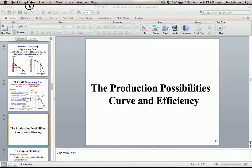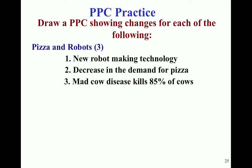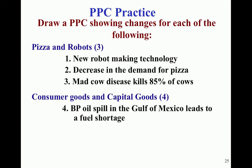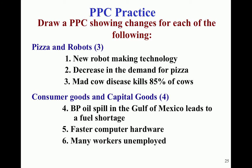Here's some practice. You should pause the recording, take as long as you need, and then play it back when we look at the answers. For the pizza and robots PPC: number one, new robot-making technology; number two, a decrease in the demand for pizza; number three, mad cow disease kills 85% of cows. Then for consumer and capital goods: a BP oil spill in the Gulf of Mexico leads to a fuel shortage; faster computer hardware is invented; many workers are unemployed; and significant increases in education.